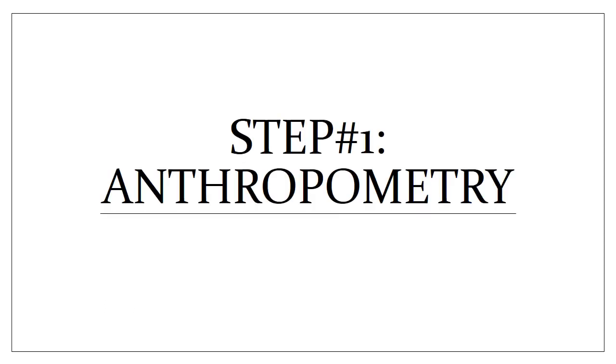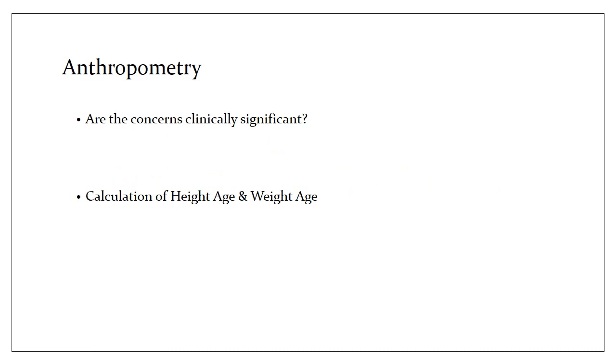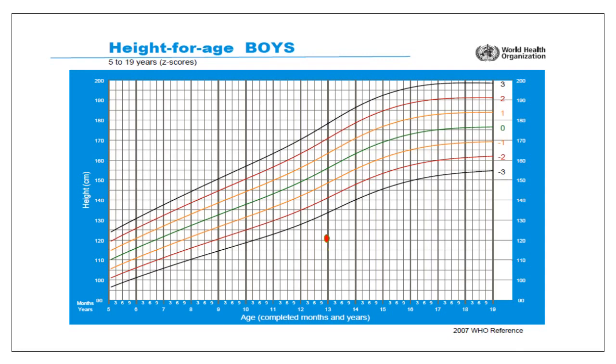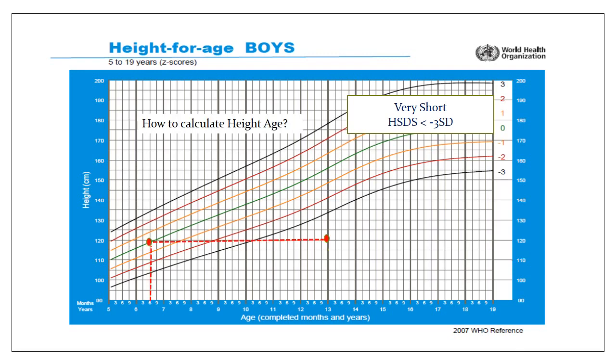Step one is anthropometry. It unravels whether the concerns are clinically significant and helps you calculate the height age and weight age. Let's give examples of clinically significant concern for evaluation. Here we have a child 13 years of age with 120 centimeters of height. When we plot, we find the child is very short and the height standard deviation score is less than minus three standard deviations. This is a straight indication to evaluate. How do you calculate height age? We need to know at what age 120 centimeters would be 50th percentile. We find that the height age for 120 centimeters is six and a half years.